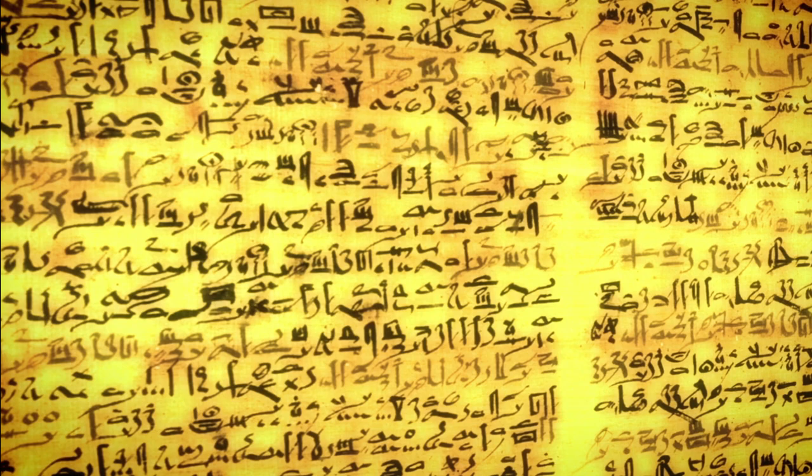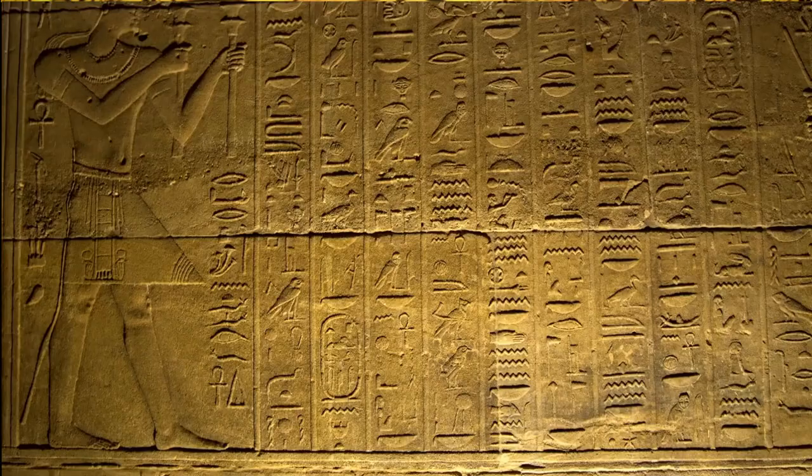The ancient Egyptians used reeds to write on papyrus scrolls. The reeds were cut to a point and then dipped in ink. The ink was made from a mixture of soot and water, and it was used to write the ancient Egyptian hieroglyphs.